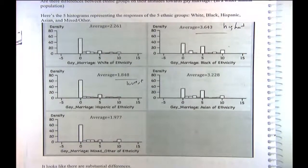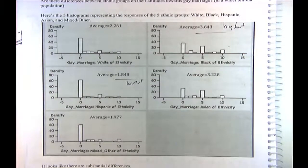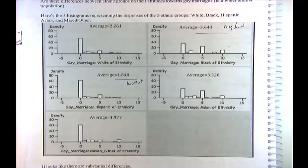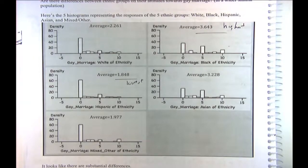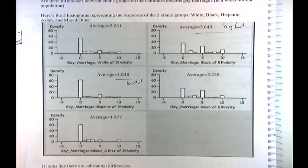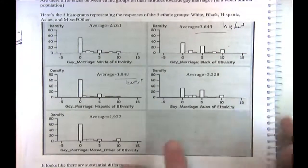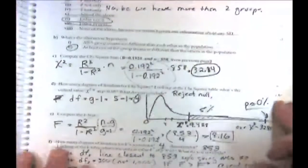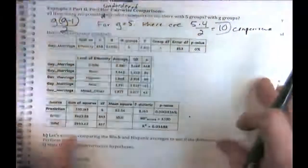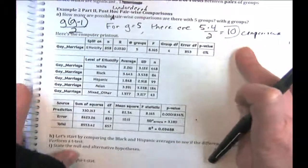What do you have to do? You have to adjust that p-value. We're going to multiply whatever p-value we get by 10 because there are 10 possible comparisons among 5 groups.